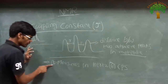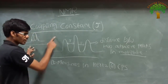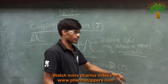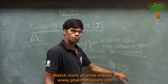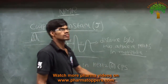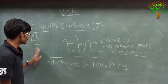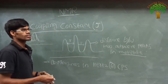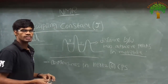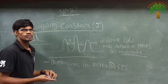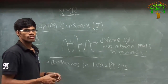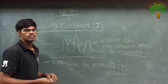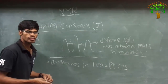The coupling constant is measured in Hz, or CPS — that is, cycles per second. Up to this, NMR is completed. If any queries, you can contact Pharmatopos — the website is www.pharmatopos.com. Thank you.